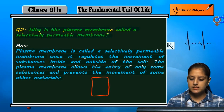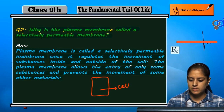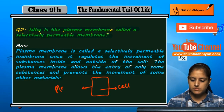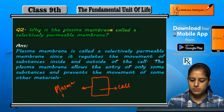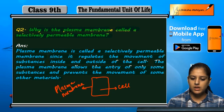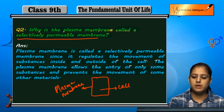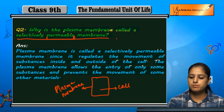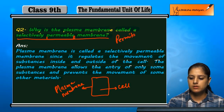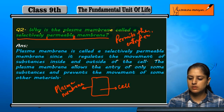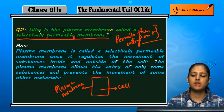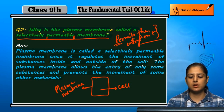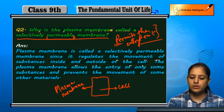The plasma membrane is the outer covering of the cell. It is called a selectively permeable membrane. 'Permeable' means which permits or allows substances to come inside or outside, so the plasma membrane regulates the entry and exit of substances.